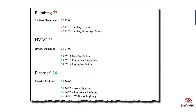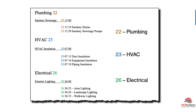As you can see, Plumbing is Division 22. Everything starts with your two digits — the specs will always start with 22 if you're in plumbing, always start with 23 if you do HVAC, and always start with 26 for Electrical.